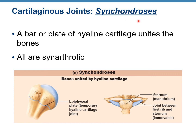Synchondrosis — 'syn' means come together, so two cartilaginous parts come together. An example is a bar or plate of hyaline cartilage that unites bones, such as the epiphyseal plate, which is a type of synchondrosis. These are all synarthrotic — no movement. Another example is the joint between the sternum and the first rib only, which is immovable, and the cartilage there is hyaline cartilage.